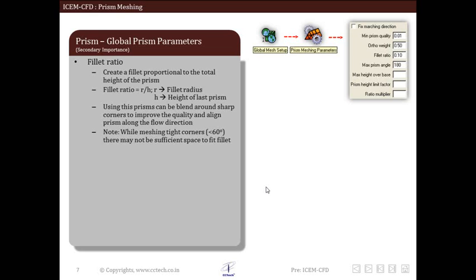Now the next parameter is fillet ratio. Fillet ratio is defined as the ratio of fillet radius to prism height. This creates fillet proportional to the height of prism layer. Generally this is used to blend prism smoothly around sharp corners. Setting fillet ratio to 0 creates sharp corners on the prism surfaces.